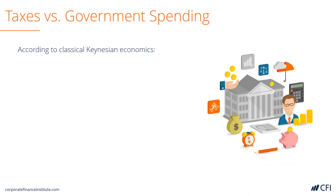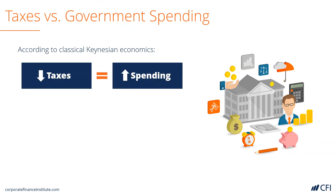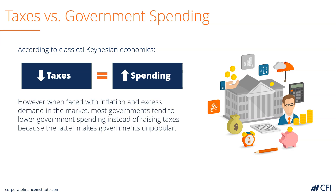According to classical Keynesian economics, a reduction in taxes and an increase in government spending affect the economy in similar ways. Conversely, an increase in taxes would equal a decrease in government spending. However, when actually faced with inflation and excess demand in the market, most governments tend to lower government spending instead of raising taxes, because raising taxes reduces the amount of support for the government.